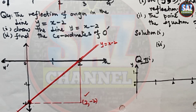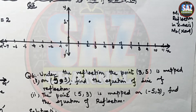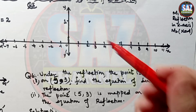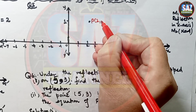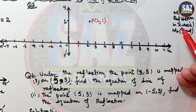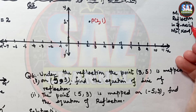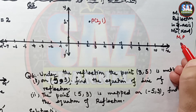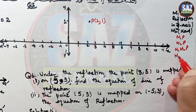Let's move to question 5. The point P(2, 1) is transformed: M1 is the reflection in the y-axis, and M2 is the reflection in x equals 4. I need to find the coordinates of M1P, M2P, M1(M2P), and M2(M1P).